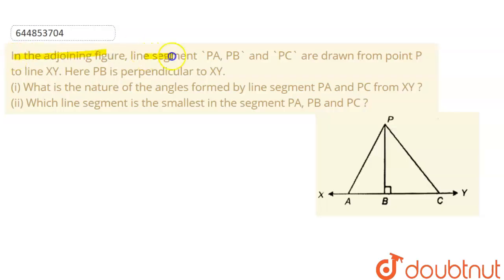In the adjoining figure, line segment PA, PB and PC are drawn from point P to line XY. Here PB is perpendicular to XY. So first part is: what is the nature of the angles formed by line segment PA and PC from XY?